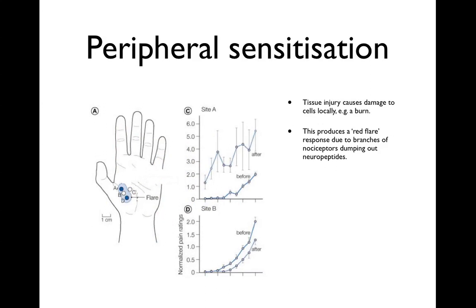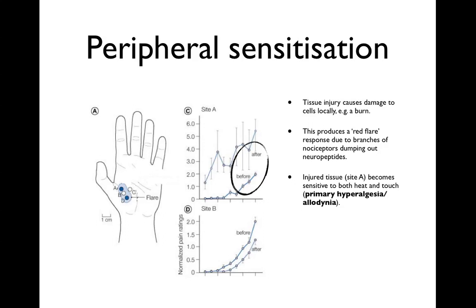Looking at the picture of the hand, dark blue circles A and D show where the tissue has been damaged, and area B in between shows the red flare — the light blue area where you'd see neurogenic inflammation. In the area of actual tissue damage (site A), we get thermal hyperalgesia, called primary hyperalgesia, which is sensitive to both heat and touch. So primary hyperalgesia involves increased sensitivity to heat and mechanical stimulus at the damaged site.